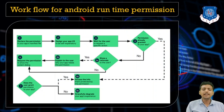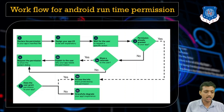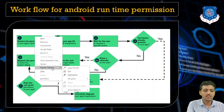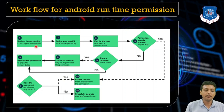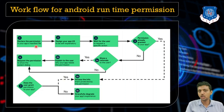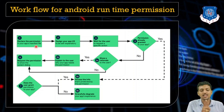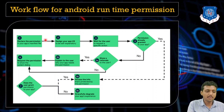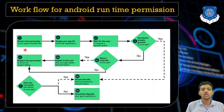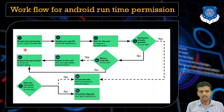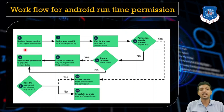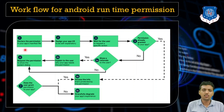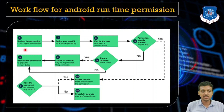It is very necessary to understand the workflow for runtime permissions, because whenever you develop an application that asks for runtime permission, you have to follow this flow. Step one: declare the permission in your app's manifest file. The manifest file is the heart of your Android project, so whatever type of permission you want, you just need to write it in your app manifest file.